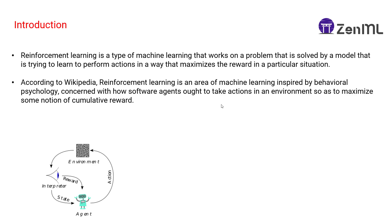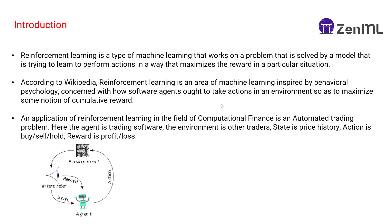Wikipedia states that reinforcement learning is an area of machine learning, inspired by behavioral psychology, concerned with how software agents are to take actions in an environment so as to maximize some notion of cumulative reward. We want to increase that reward because we want to take correct actions. This agent learns from prior actions — if the agent does not perform a particular action in a good way, it learns that and does not perform the bad action again.